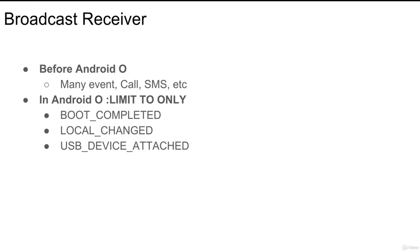If your application targets Android O, you are now limited — you are not able to access call events, SMS events, or many other things. Only three broadcast events are available to you in Android O: boot completed (meaning whenever your phone starts up you can define a broadcast receiver that listens to startup to schedule jobs or alarms), locale change, and USB device attached (whenever a USB device is connected). So in Android O you can only listen to these three system broadcast events. Make sure your application supports both versions, otherwise your application will not work on all devices.